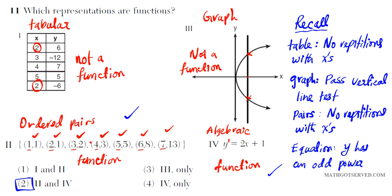For problem 11, you have to remember the different representations of a function. For tabular representation, there cannot be repetitions in the x or input values — same rule for ordered pairs. For option three, the graphical representation must pass the vertical line test; it fails here because a vertical line intersects at two points. For option four, if given an algebraic equation, make sure the output variable has an odd power — an even power means it is not a function. The only ones that pass are two and four.